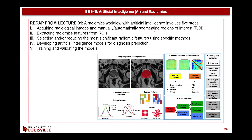Hello everyone, this is lecture 6 of course PE645. In the previous lectures, we dealt with different types of features starting from first order features and ending with the gray level size zone matrix. All of these features can be used in our pipeline or system that we are going to build, aiming to classify between different categories. As a recap, a radiomics workflow with artificial intelligence can include five steps.